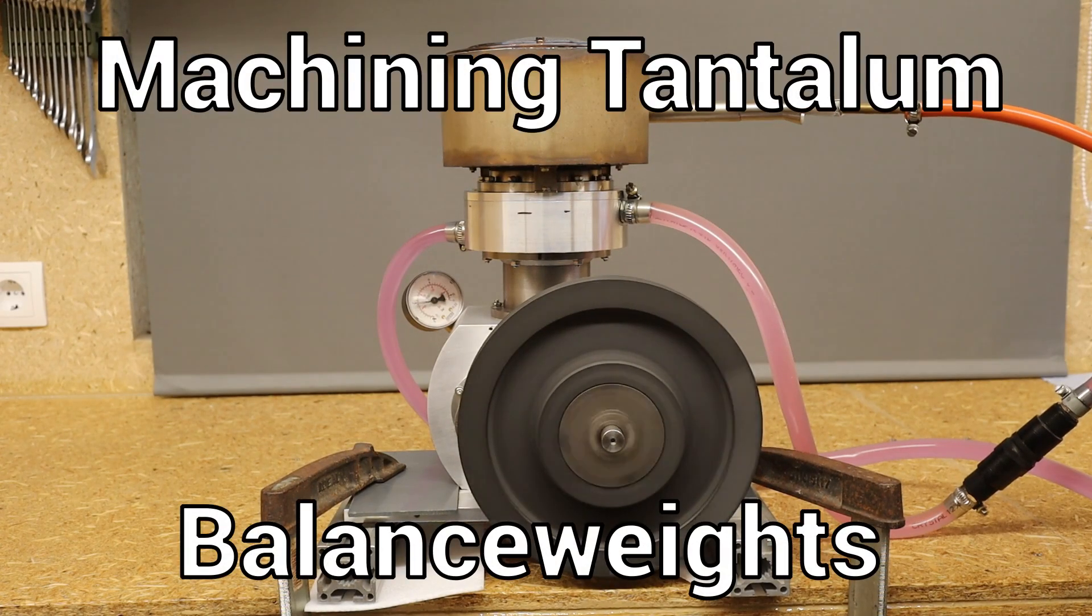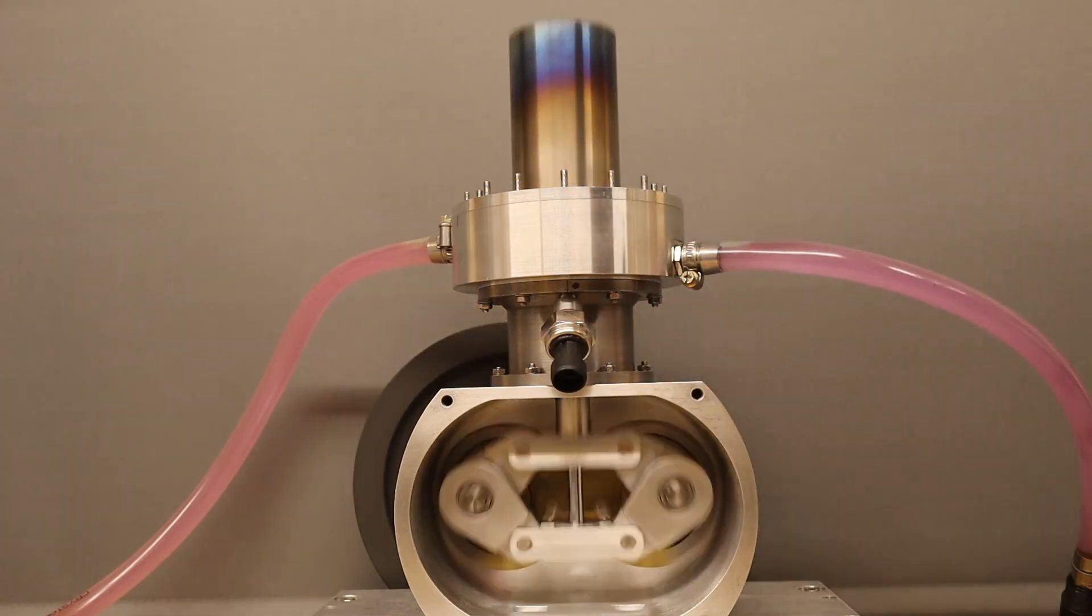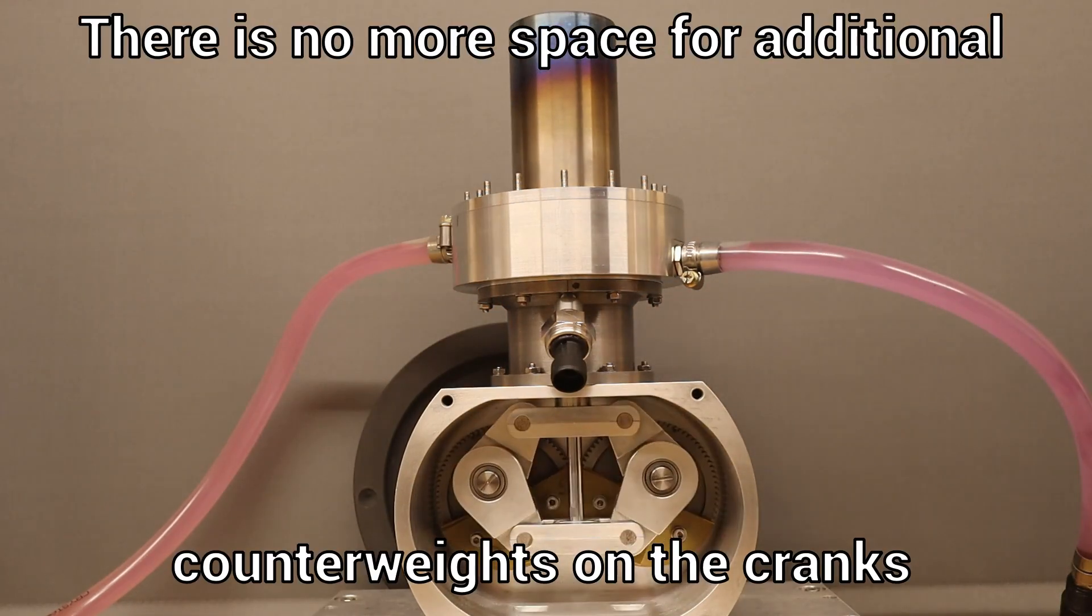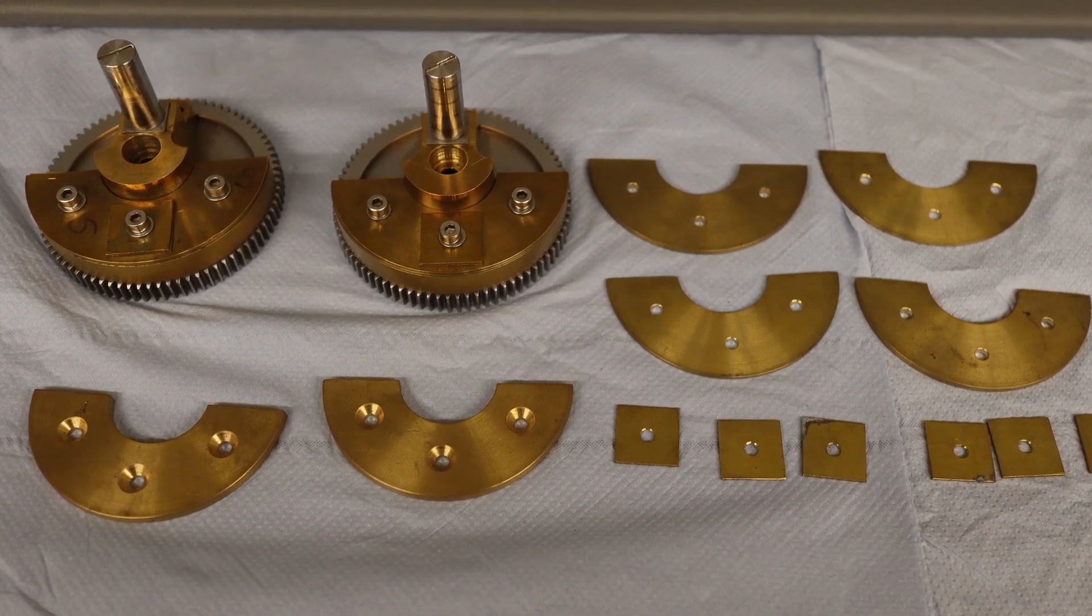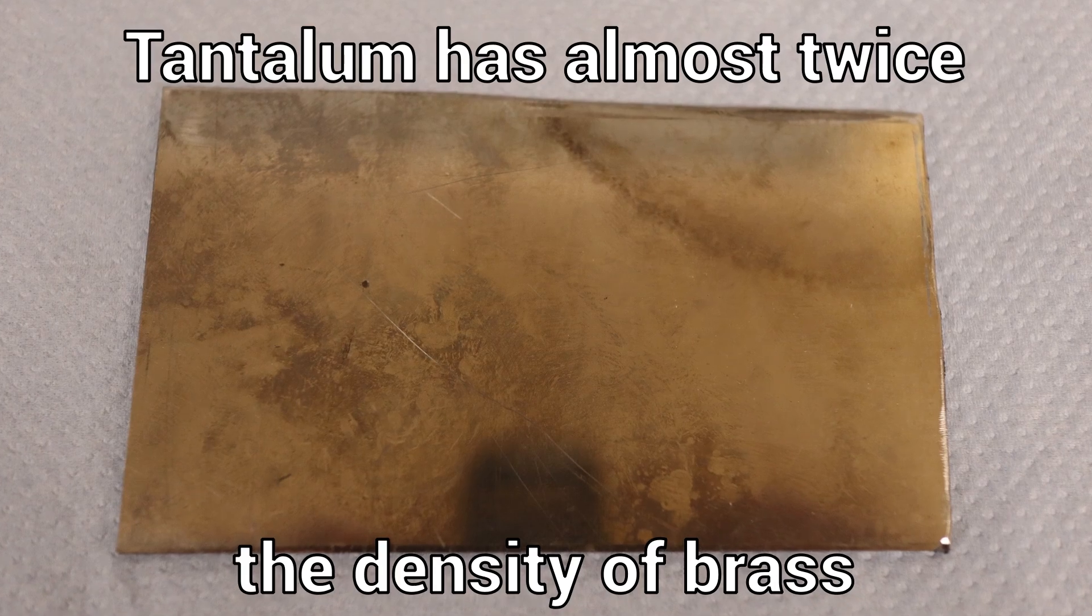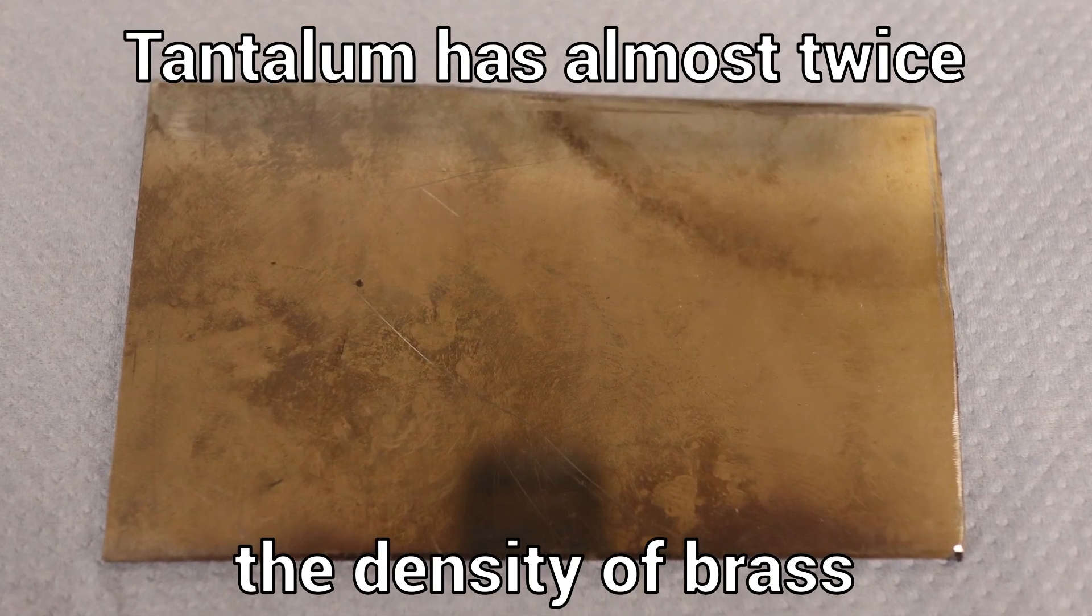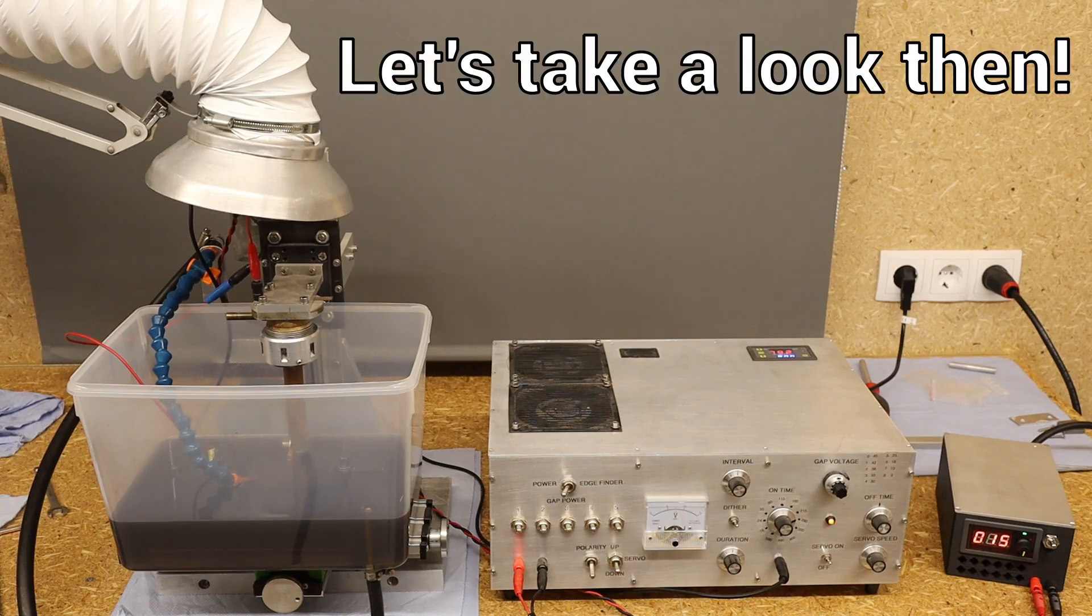My new Sterling engine runs quite rough, still unbalanced, so I need heavier counterweights. I have this piece of very dense tantalum sheet which is very difficult to machine. I thought this would be an ideal part for my homemade pulse EDM, which I have used to make many parts.